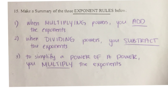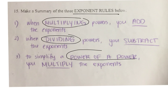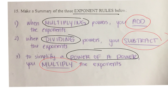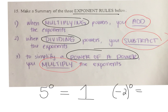This was a summary of the three exponent rules, and this is what your quiz will be on. Rule 1 is multiplying powers; rule 2 is dividing powers; rule 3 is a power of a power. One more thing: anything to the power of 0 — if I have 5 to the power of 0, the answer is 1. If I have negative 2 to the power of 0, the answer is always positive 1. Anything to the power of 0 will always result in 1. You can test this on your calculator.